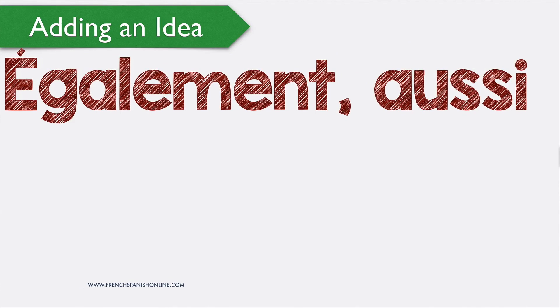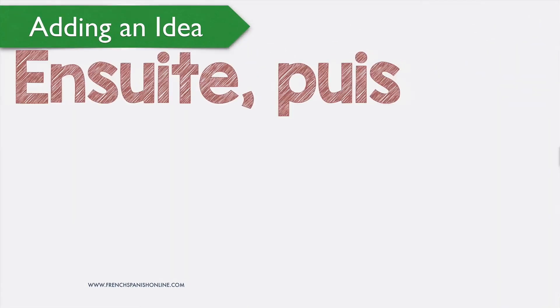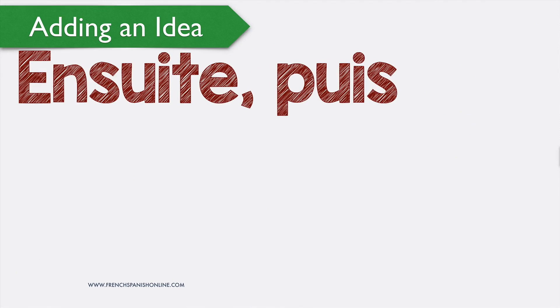'Également' and 'aussi' are synonymous, both meaning 'also'. For example: 'tout d'abord il faut être aimable, également nous devons être persuasif'. You can also place it inside the sentence: 'nous devons être également persuasif', or use 'aussi': 'nous devons être aussi persuasif'.